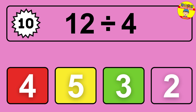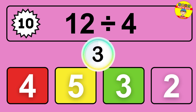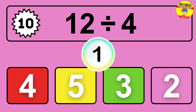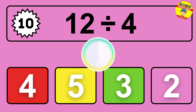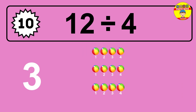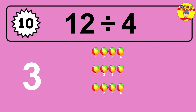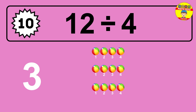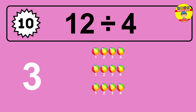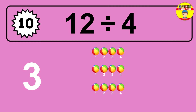12 divided by 4 is time to think. Let's go to the solution. Divide the number 12 by 4. Each group contains 4 units, so dividing 12 by 4 results in 3 equal groups. Thus the result is 12 divided by 4 equals 3.